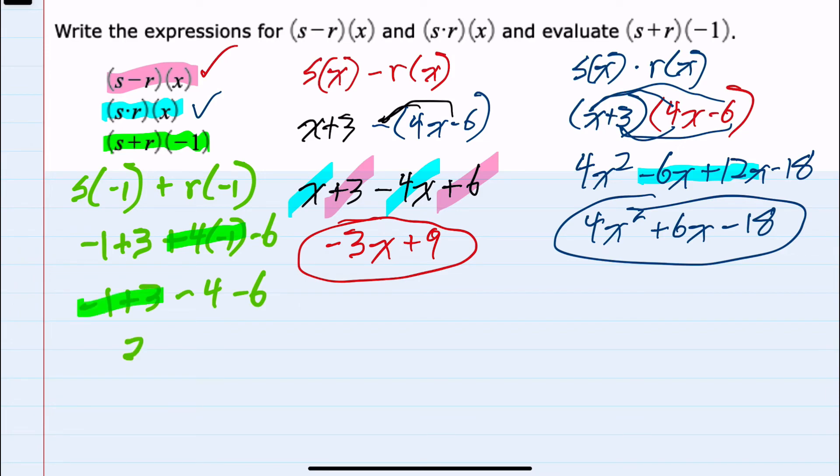Minus 1 plus 3 is 2. 2 minus 4 is negative 2. And then negative 2 minus 6 is a negative 8. So negative 8 would be our s plus r of negative 1.